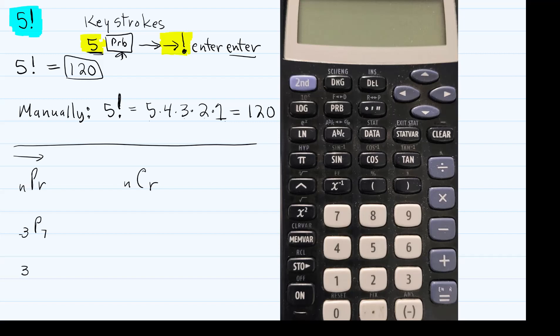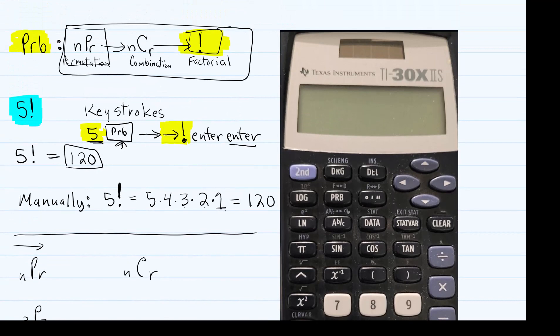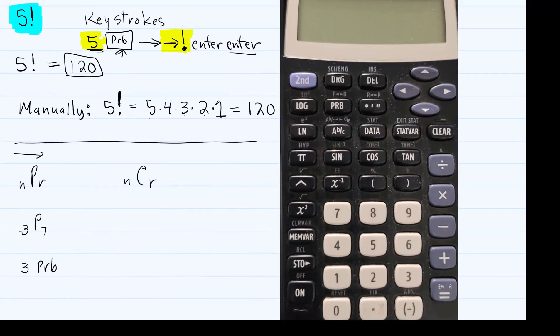You hit three, PRB, and for permutation it's already there. So you hit enter. Then you type seven and hit enter again. And then that would give you your answer. And I have not typed that in, so let me type that in now. Three, PRB, enter, seven, enter.